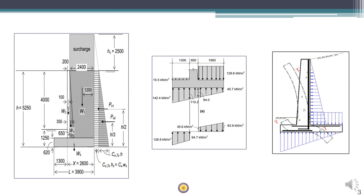In the previous lecture it was already seen that the initial proportion which was proposed was satisfying all the stability conditions and the dimension was accepted as the final proportion. We also found out what is the active earth pressure diagram, what are the different weight components, and what is the net soil pressure distribution at the base of the base slab. In this lecture we will start with designing and detailing of each of these elements: toe, heel, and stem.